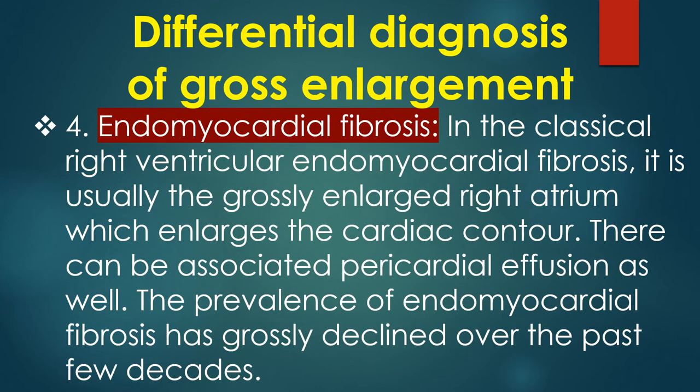4. Endomyocardial fibrosis. In classical right ventricular endomyocardial fibrosis, it is usually the grossly enlarged right atrium which enlarges the cardiac contour. There can be associated pericardial effusion as well. The prevalence of endomyocardial fibrosis has grossly declined over the past few decades.